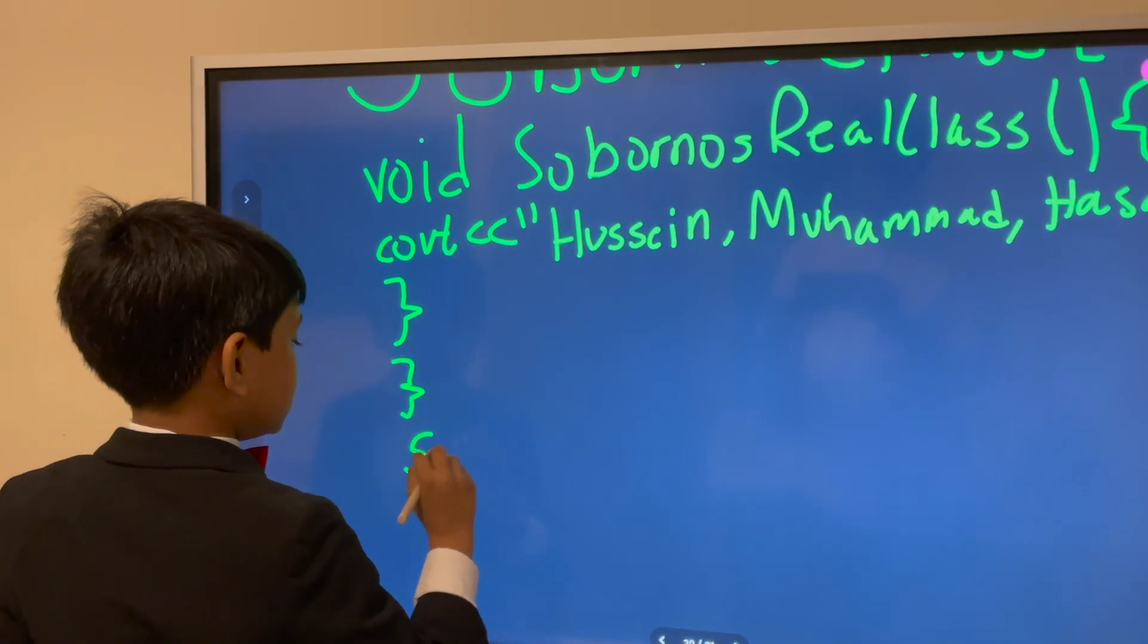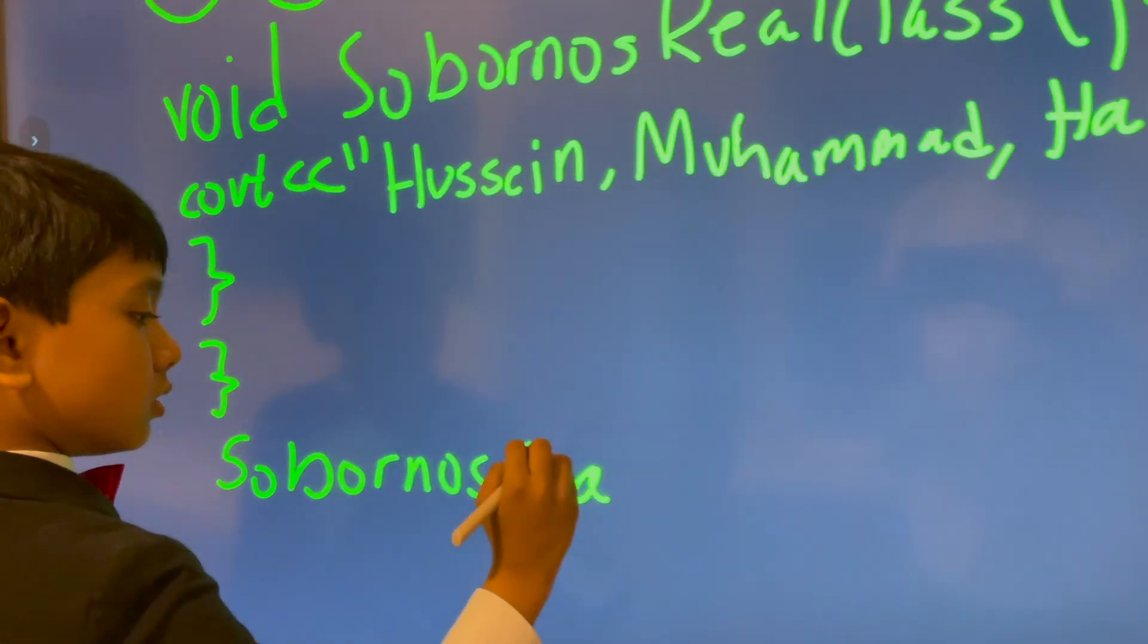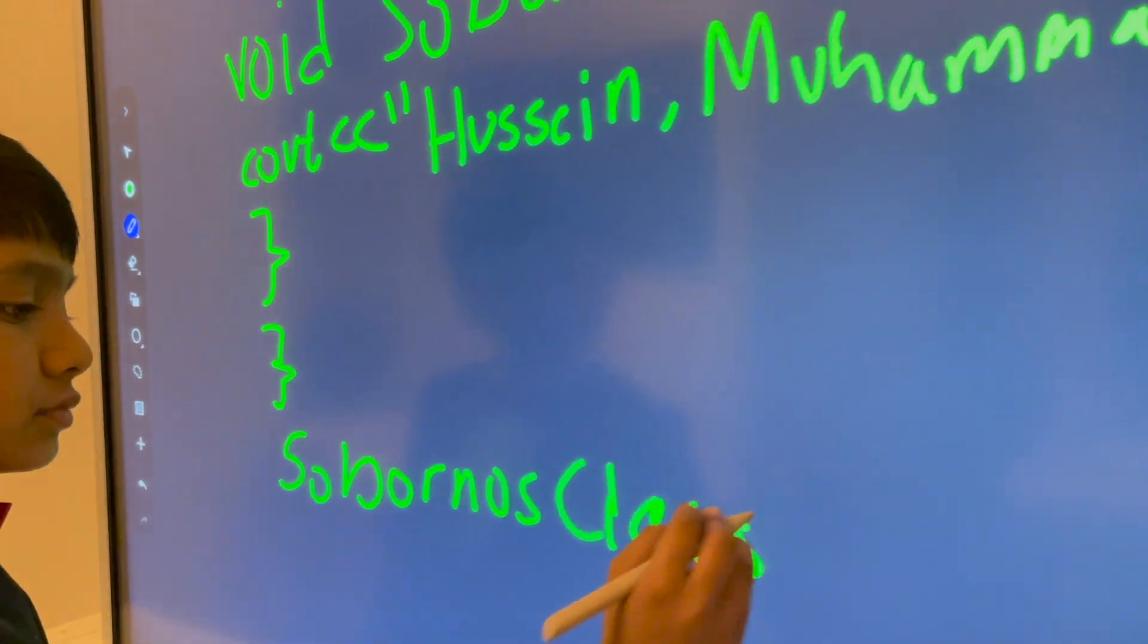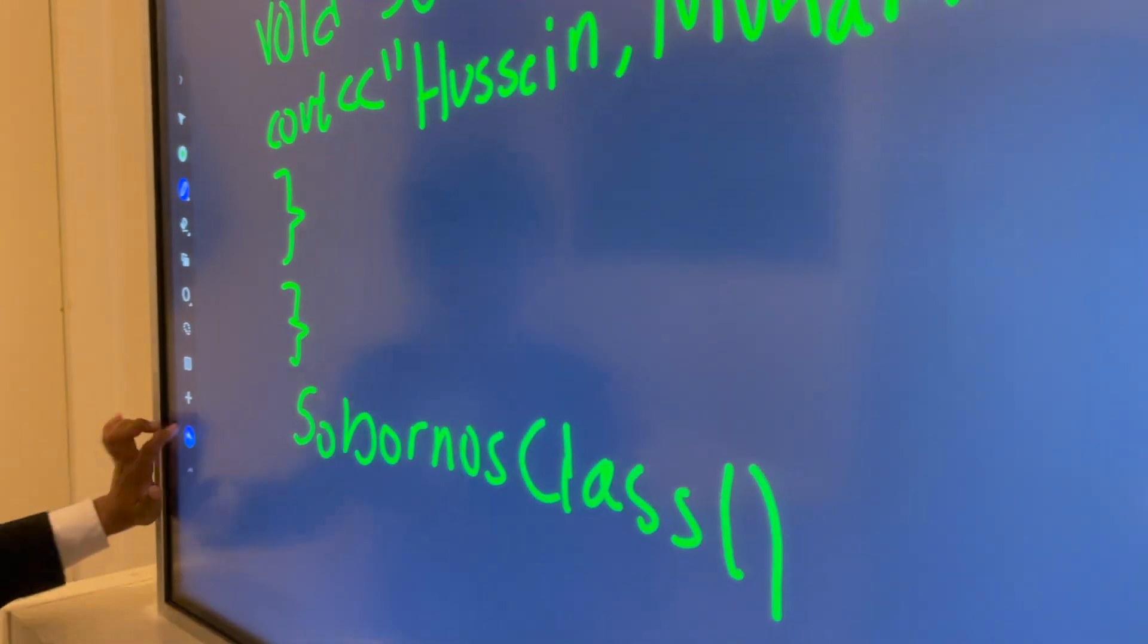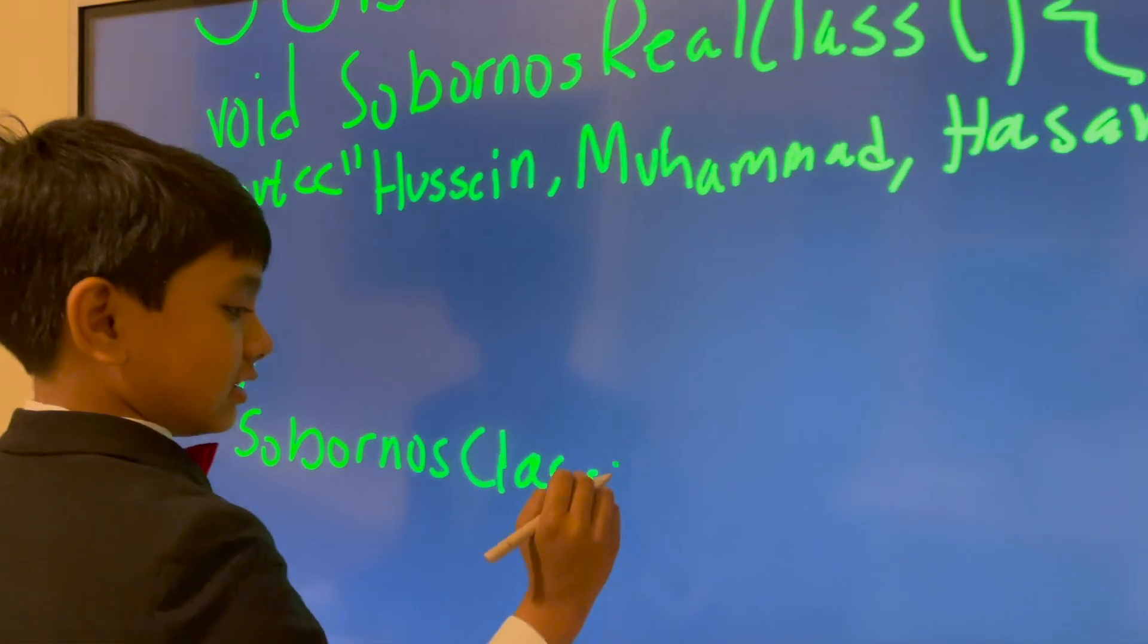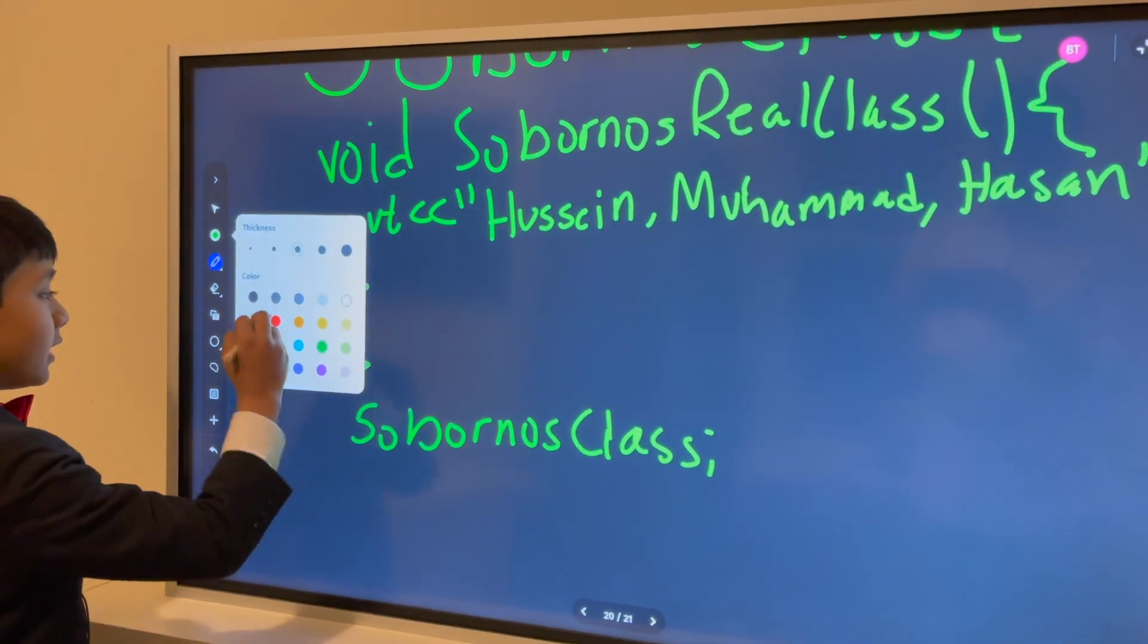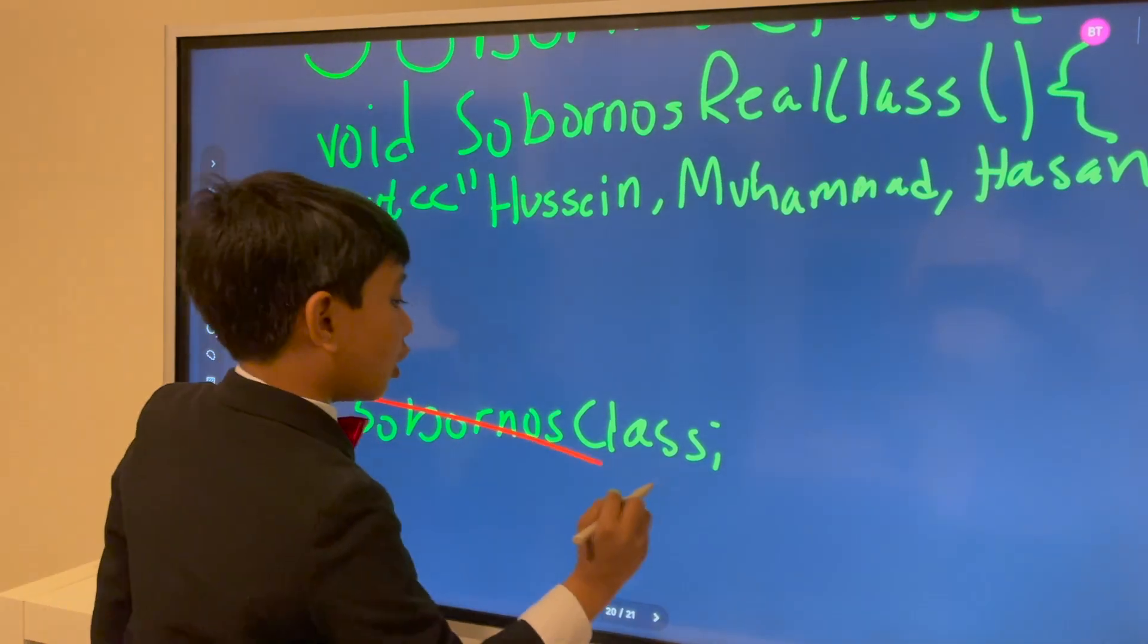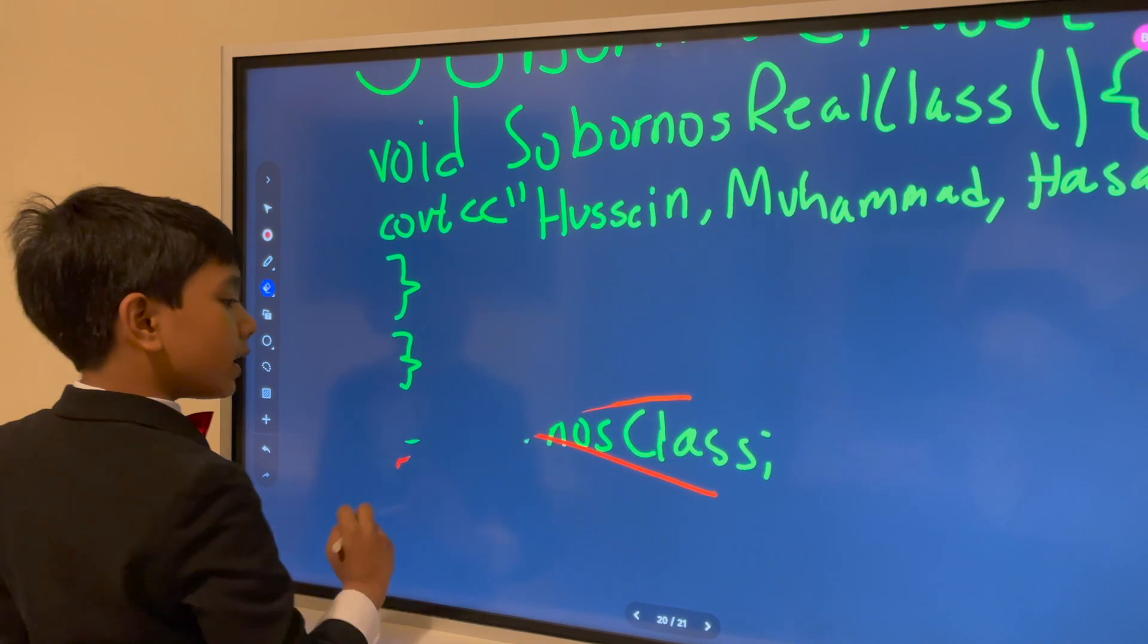And the thing is, just doing this with Soborno's Class won't work. Neither with the parameters because those don't exist. So Soborno's Class, this is wrong and wrong.